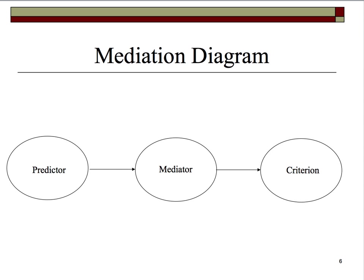Here's a typical mediation diagram. We have the predictor leading to or causing a mediator, or the mediator leading to or causing a criterion. So there's sort of a causal linkage — X1 causes M, which causes Y, for example.